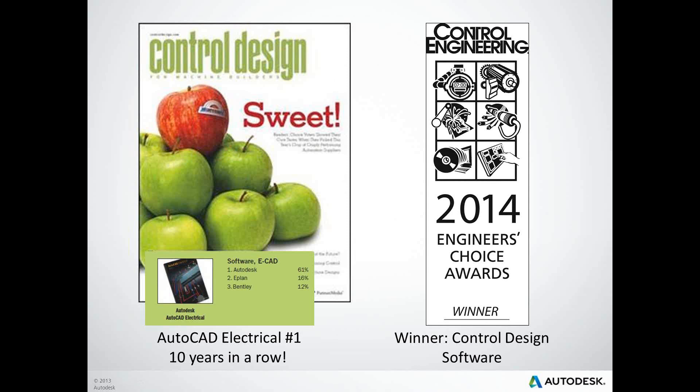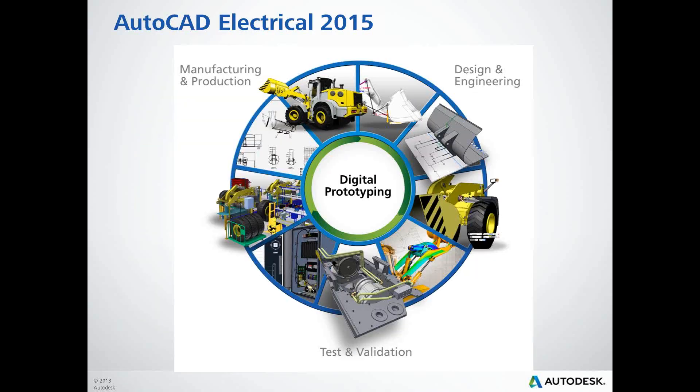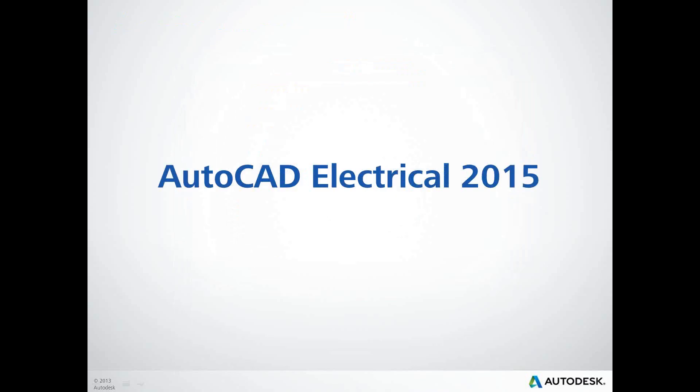No Autodesk presentation would be complete without showing the digital prototyping wheel. I particularly like this one because it shows AutoCAD Electrical as part of the digital design process. If you have a machine and it moves, something is controlling it — usually something electrical. AutoCAD Electrical can help save you time and give you efficiency gains in creating electrical schematics, wiring diagrams, and panel layouts.